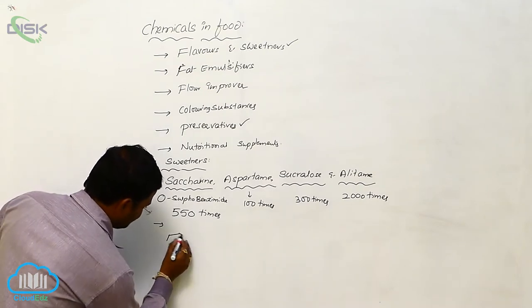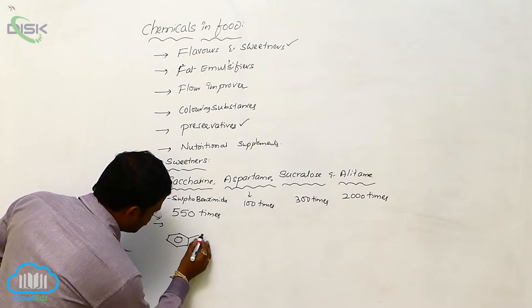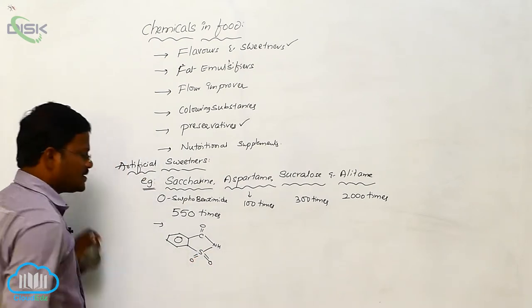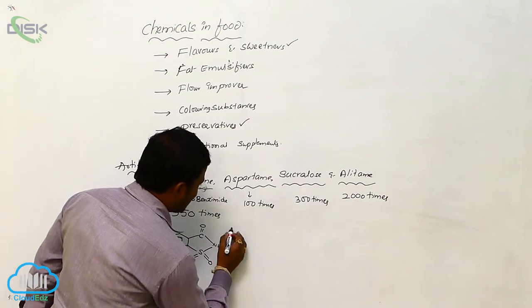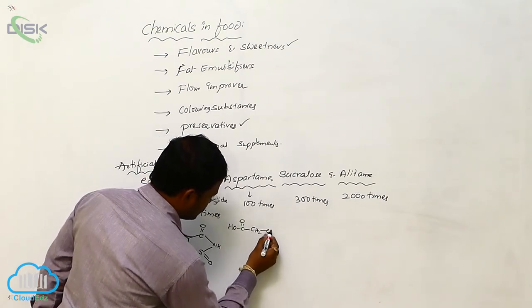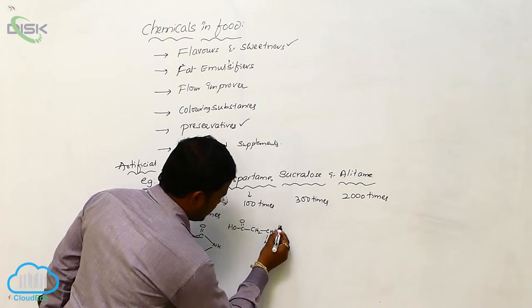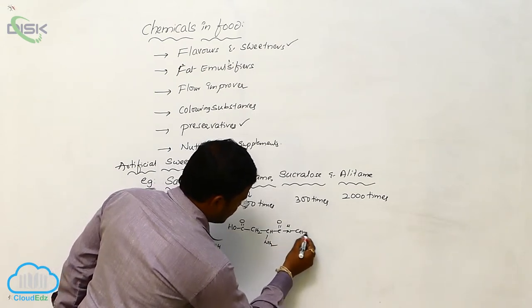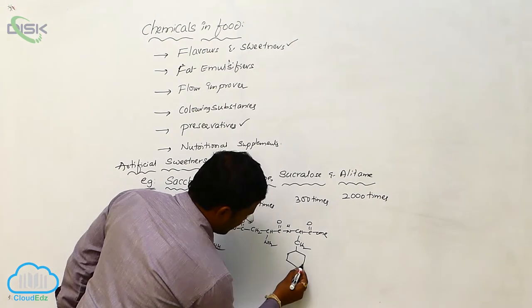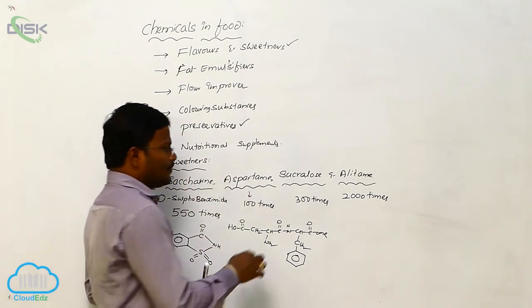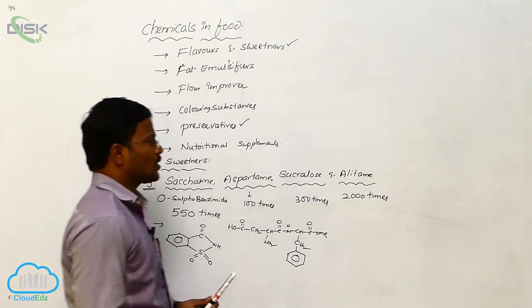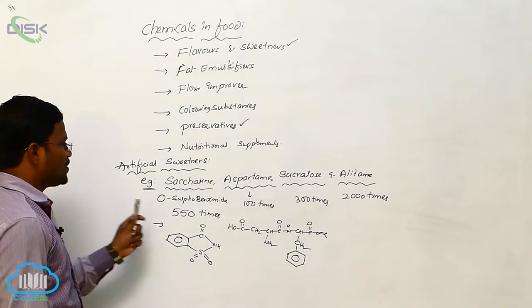The most widely used artificial sweetener by human beings is saccharin. The structure of aspartame consists of C=O, CH2, CH, NH2, C=O, NH, CH, C=O, OCH3, CH2, and a phenyl ring. For sucralose, two carbons in natural sugar are substituted with chlorine. These are the structures of the main artificial sweeteners.